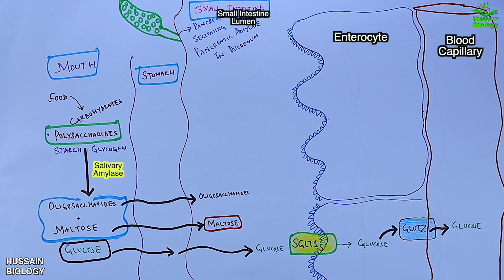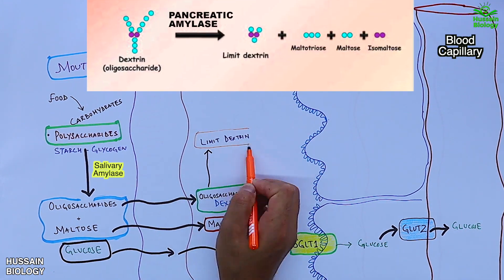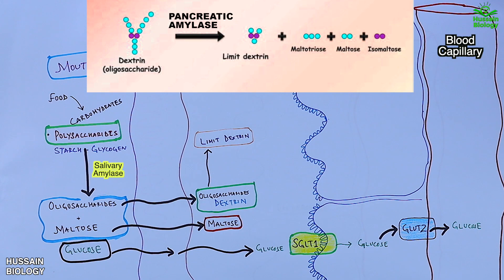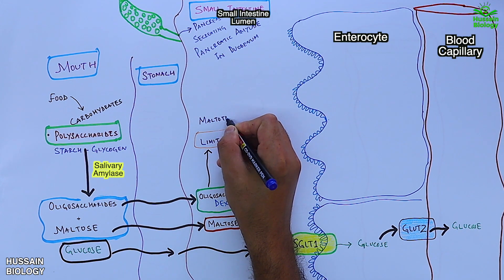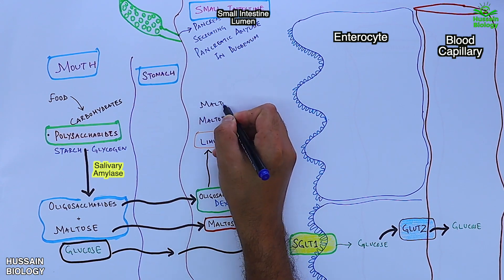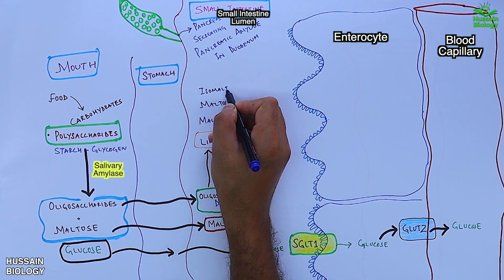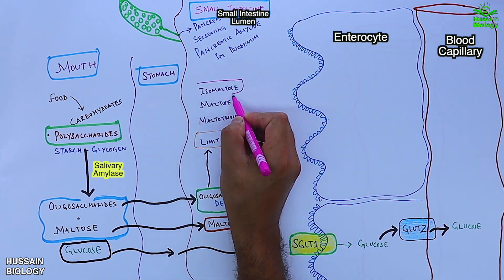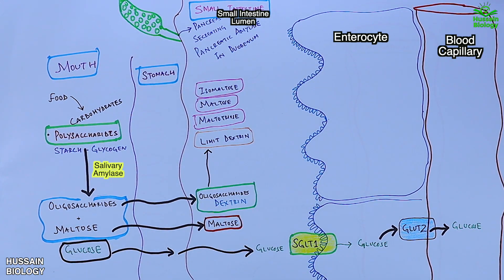These oligosaccharides like dextrin are converted into limit dextrin. The disaccharides formed in the small intestine include maltotriose, maltose, isomaltose, sucrose, and lactose.